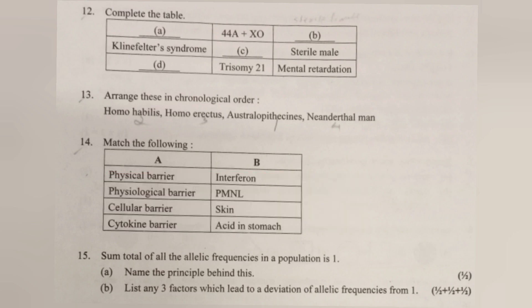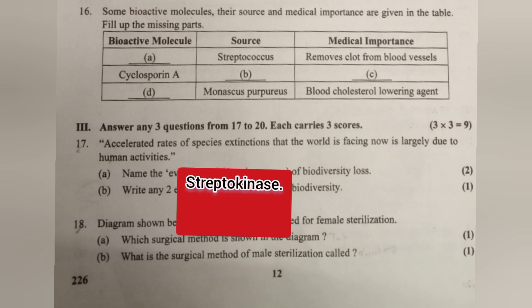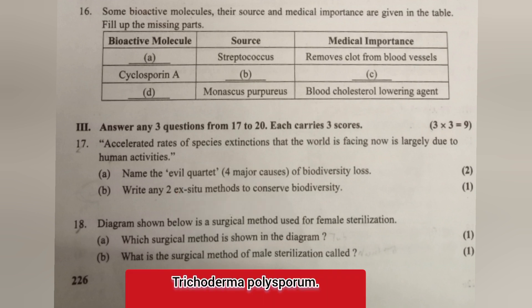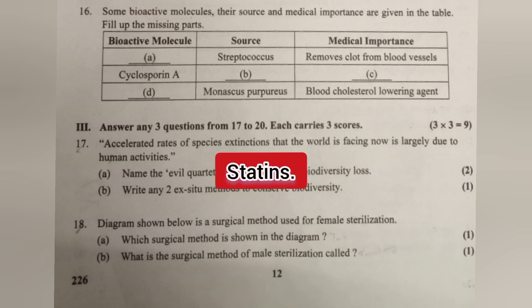Question 16: Some bioactive molecules, their sources and medical importance are given in the table. Fill up the missing parts. Answer: A. Streptokinase. B. Trichoderma polysporum. C. Used as immunosuppressive agent. D. Statins.